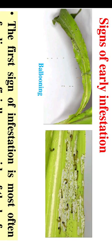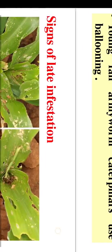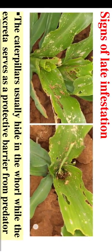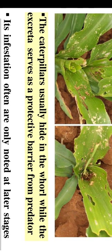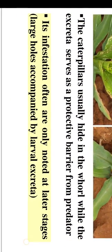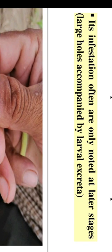Signs of early infestation — ballooning: the first sign of infestation is most often feeding superficially on one side of the leaf. Young fall armyworm caterpillars use ballooning. Signs of late infestation: caterpillars usually hide in the whorl while excreta serves as a protective barrier from predators. Infestations are often only noted at later stages — large holes accompanied by larval excreta.